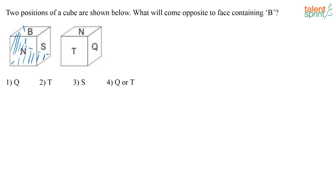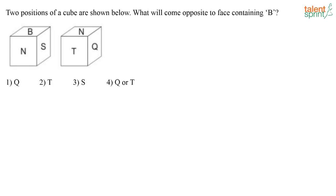So now you have to say which is opposite to B. If you imagine this cube has been turned that side, N is going up. So whatever face is below B, that is the one that is going to come here and this is going to be the face that is opposite to S. If you imagine it properly, you will understand. The correct answer here will be Q.